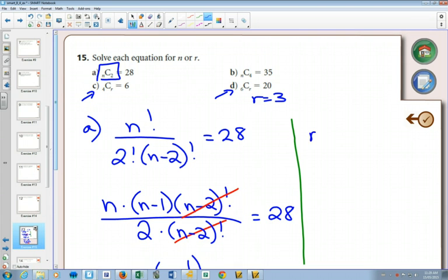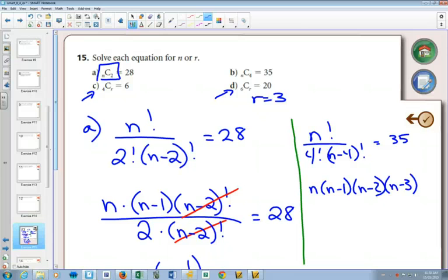But what's going to happen here, if you have n factorial over four factorial, n minus four factorial equals 35. First of all, I'm going to write this, expand it, it's going to be n minus one, n minus two, n minus three, and then the n minus fours would cancel out, and you just have 24 on the bottom, equals 35.